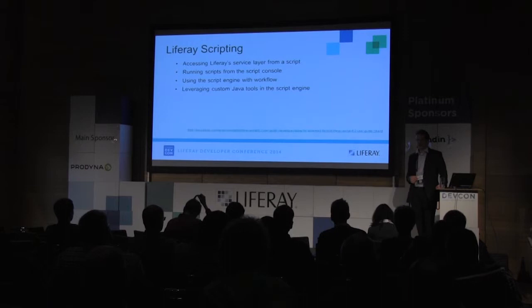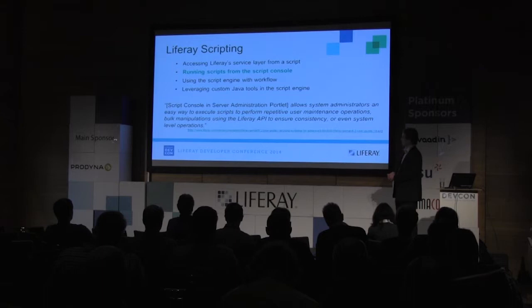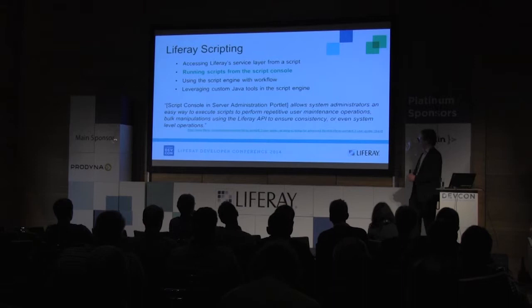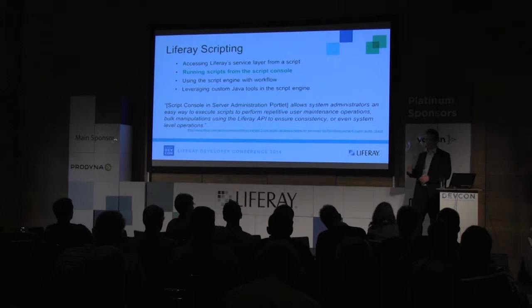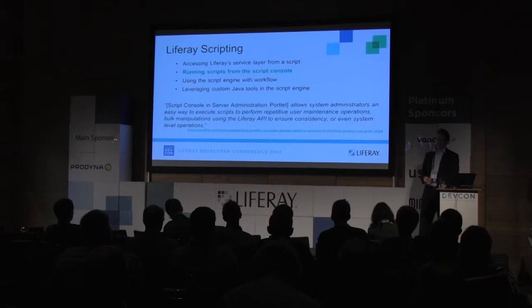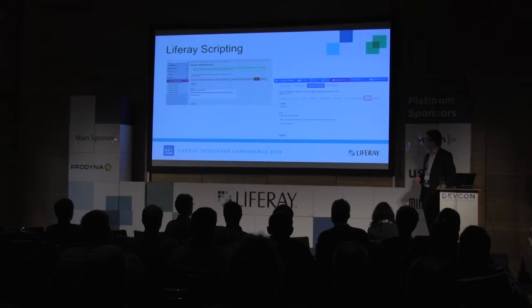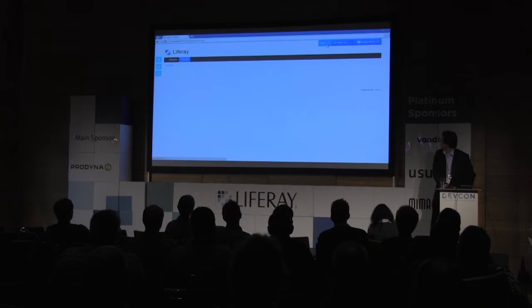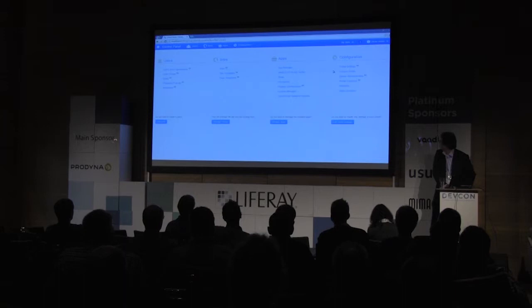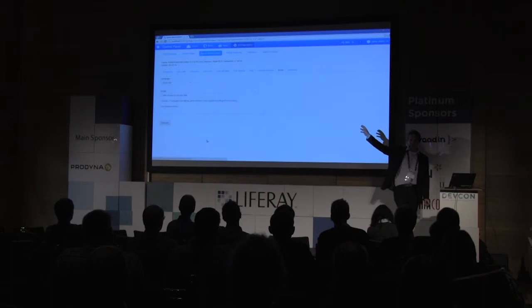For example, if you have a workflow for web content approval, these two lines which change the state of your web contents — this is basically scripting. You can also make use of custom tools within scripts. In the script console in the administration portlet inside the control panel, system administrators or other users with sufficient permissions can execute scripts to perform repetitive user maintenance operations, API manipulation, etc. You go to the control panel, go to server administration, and you have the script section there — choose your scripting language, say Groovy or Python, then hit execute.